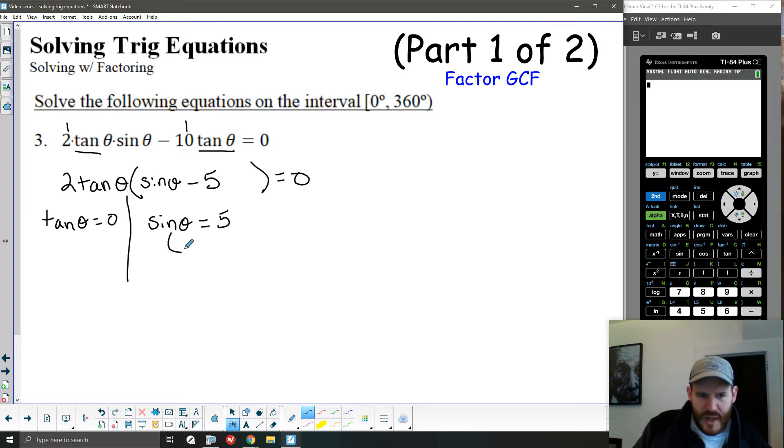Now, if you remember, the range for sine is only the values from negative 1 to 1. We talked about that in a previous video. So there's never a value of theta that I could plug in for sine to get as large as 5. So there's actually going to be no value I could plug in for theta to make that equation true. So there's no solution from this component.